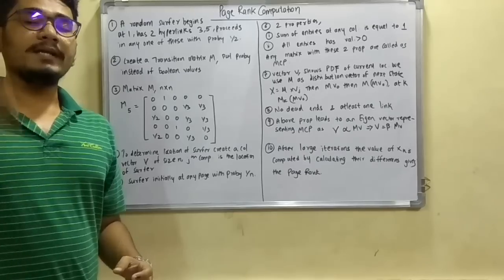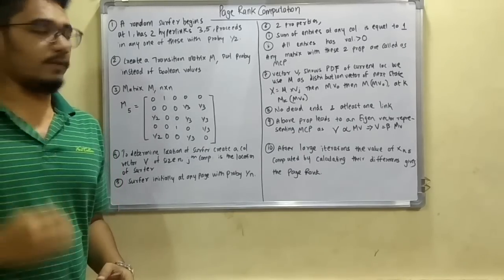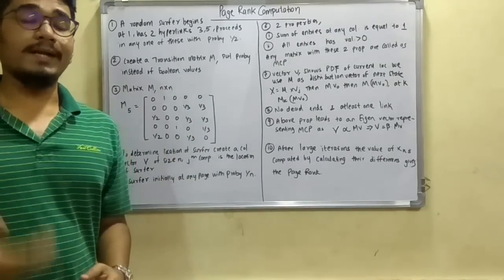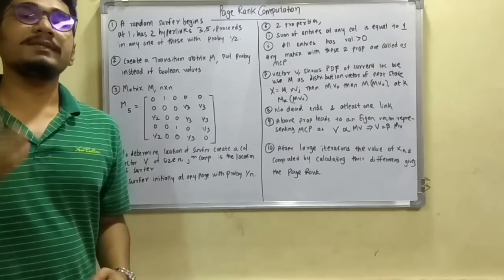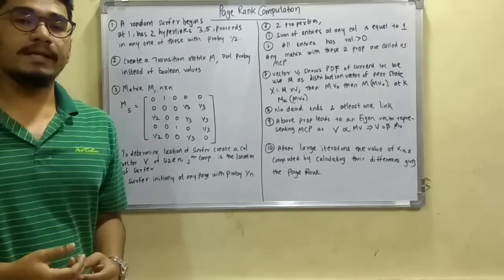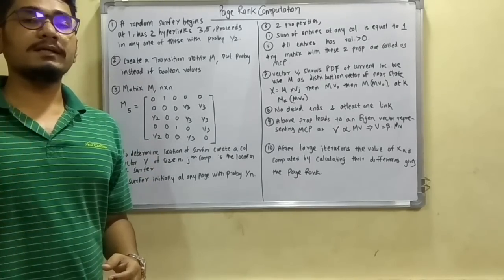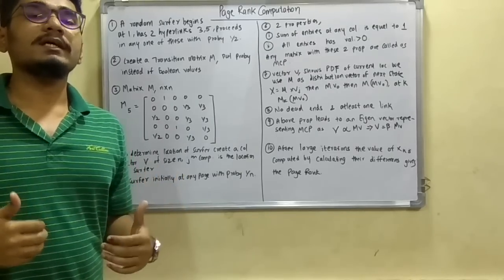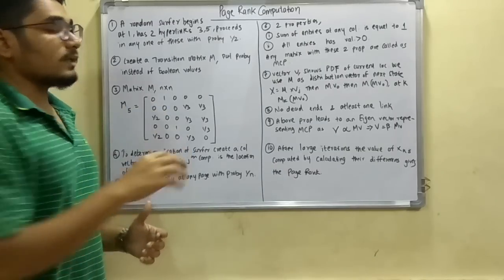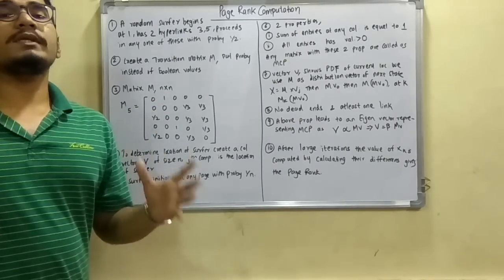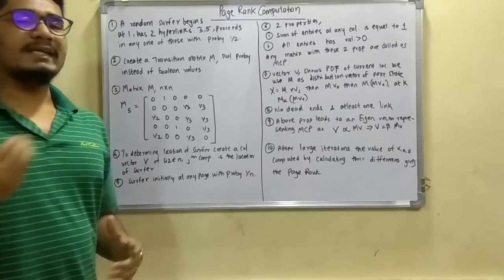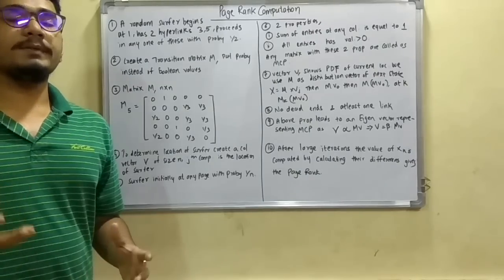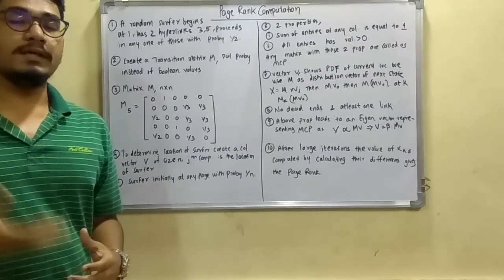We iterate any number of times until we reach a threshold. One property of this MCP is that there should be no dead ends present. Dead ends are basically a trap — called a spider trap in link analysis. A dead end means the surfer is trapped in that state and cannot move in any direction or come out to the rest of the structure. At least one link should be present so that the system is free of dead ends.